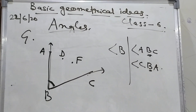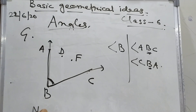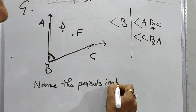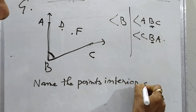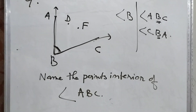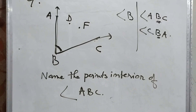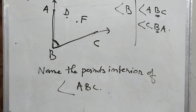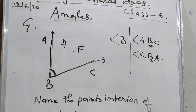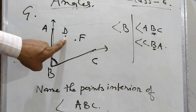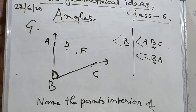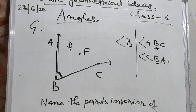Now if I ask you to name the points in the interior of angle ABC — D and F are the points which are in the interior of angle ABC. And G is the point which is in the exterior of angle ABC. So hope students, how we name the angle you have understood.